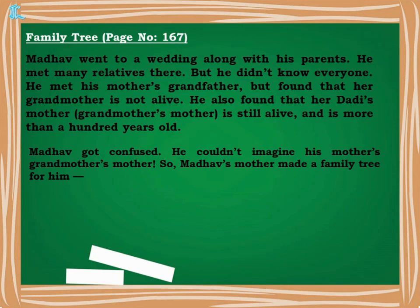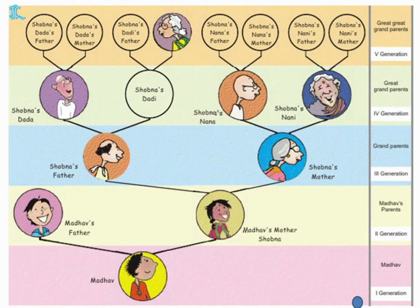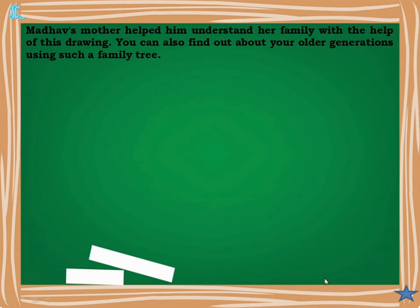Family Tree, Page 167. Madhu went to a wedding and met many relatives but did not know everyone. He met his mother's grandfather, found that his mother's grandmother is not alive, but his dadi's mother is still alive and is more than 100 years old. This was confusing, so Madhu's mother made a family tree for him.